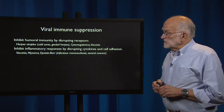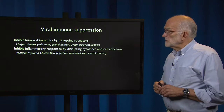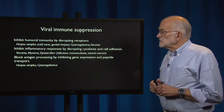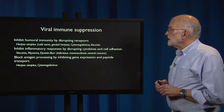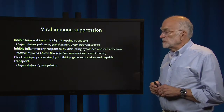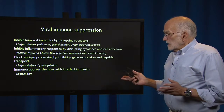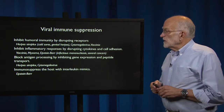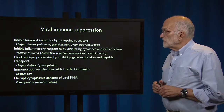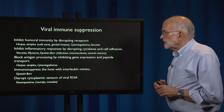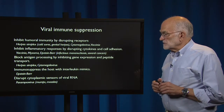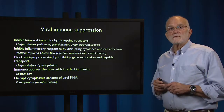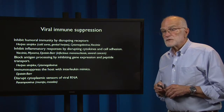Disrupting inflammatory responses is done by vaccinia, myxoma, and Epstein-Barr virus, which causes infectious mononucleosis and several cancers. Viruses can also block antigen processing by inhibiting gene expression and peptide transport — that's done by herpes simplex and cytomegalovirus. They can immunosuppress the host with mimics of interleukins, as Epstein-Barr virus does, and they can disrupt cytoplasmic sensors of viral RNA, which is done by paramyxoviruses, including agents that cause mumps and measles. So viruses have a pretty diverse repertoire of methods of suppressing the host immune system.